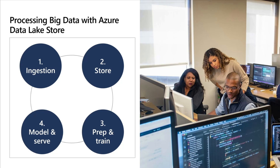When talking about processing of big data, there are multiple stages. First, you ingest data — one solution for this is Azure Data Factory. Second, you store data — this is where Data Lake comes into the picture, as it acts as Hadoop Distributed File System. Once data is in Data Lake, a big data cluster like Spark or Hadoop reads and transforms the data, machine learning models get trained, and the output gets stored in a serving layer or the models get deployed.